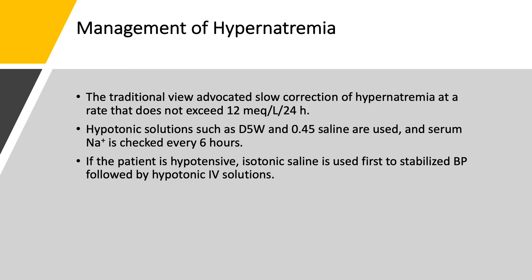If you have someone who is hypernatremic and hypotensive, supporting blood pressure takes priority. You give isotonic saline even though the patient is hypernatremic. Isotonic saline has 154 mEq per liter of sodium, which is still lower than the patient's sodium. You support the circulation first, and then you worry about correcting the hypernatremia.